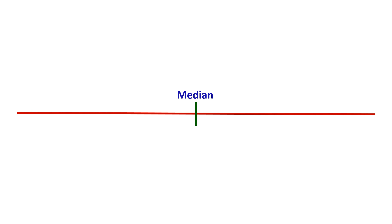Now let us see how this breaking is done. If this is a series of data and it has to be broken down into two equal parts, it has to be broken in the middle. So this breaking point is the median — the value that is placed here is the median. If the series has to be broken into four parts, we need three breaking points. The first breaking point is Q1, the second is Q2, and the second quartile is equal to the median.